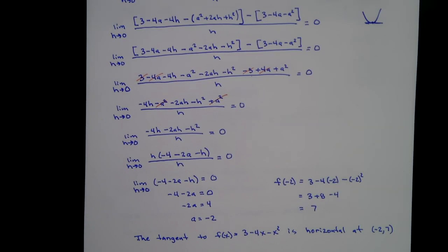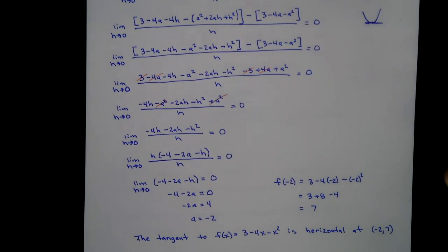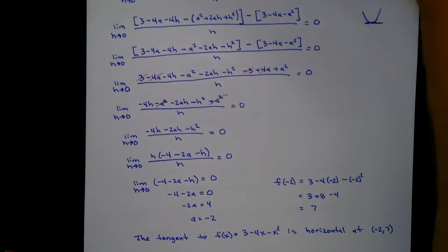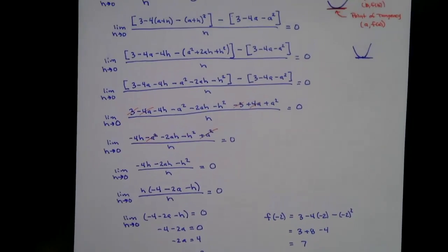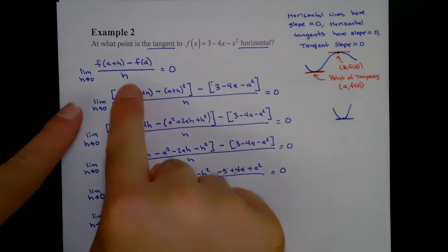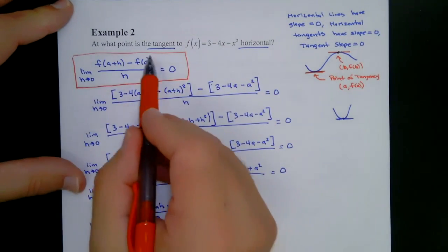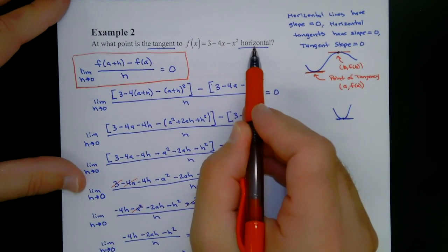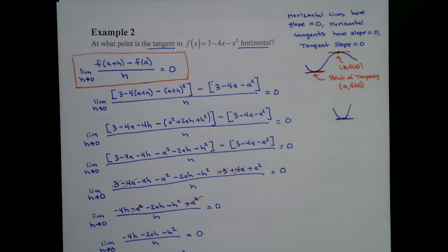That's how you go about finding the slope of the tangent line and when that tangent line is going to be zero. The key to solving this problem is finding the tangent slope and knowing when it equals zero — that's what tells you where the horizontal tangent is. That's it for today.